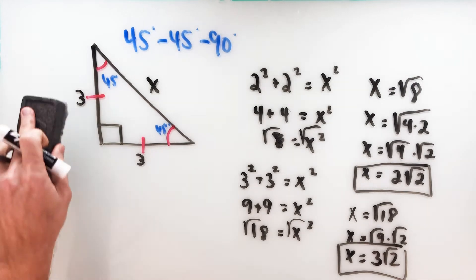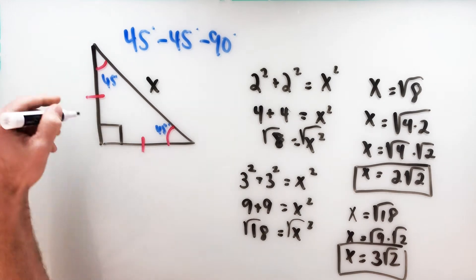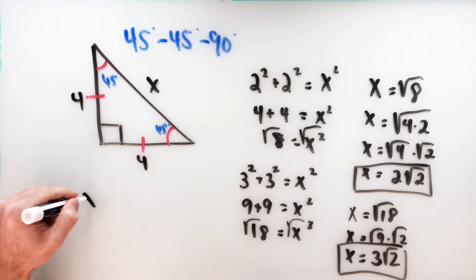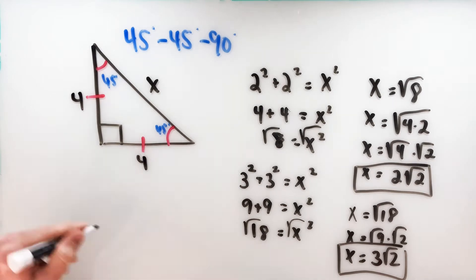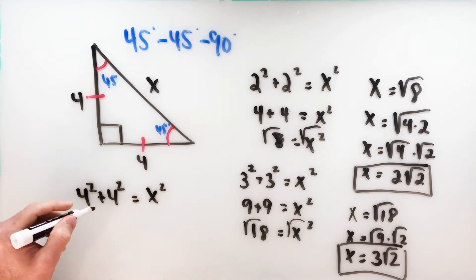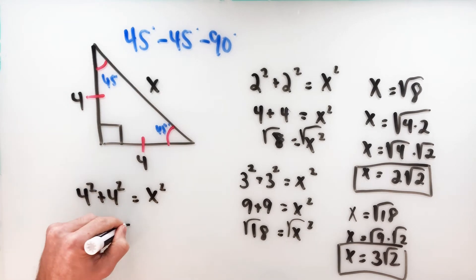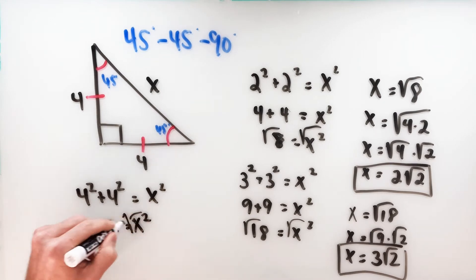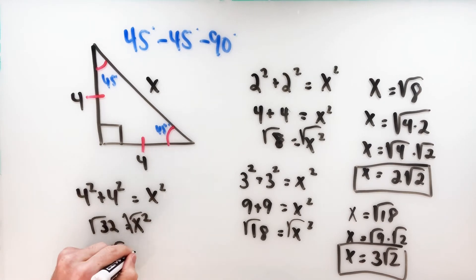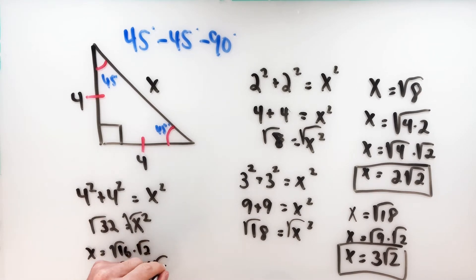Let's do one more — let's say the legs were four. Four squared is sixteen, sixteen plus sixteen is thirty-two, so x squared equals thirty-two. Thirty-two is sixteen times two, so x equals the square root of sixteen times two. The square root of sixteen is four, so x equals four root two.